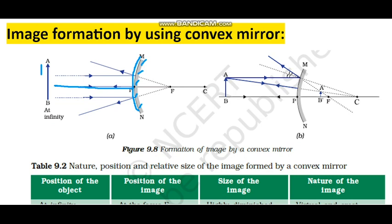The object is placed at infinity. The ray of light coming from infinity is parallel to the principal axis. When a ray is parallel to the principal axis, after striking the mirror it reflects back. We draw imaginary lines behind the mirror. You will find the image behind the mirror. Where the two imaginary lines meet, that is where you get the image — at the principal focus F.